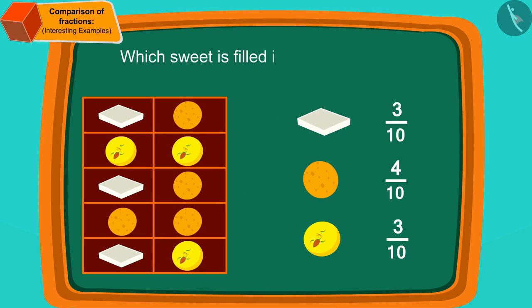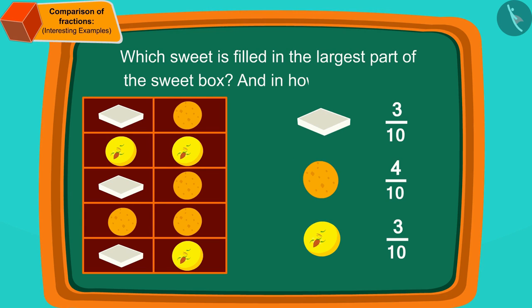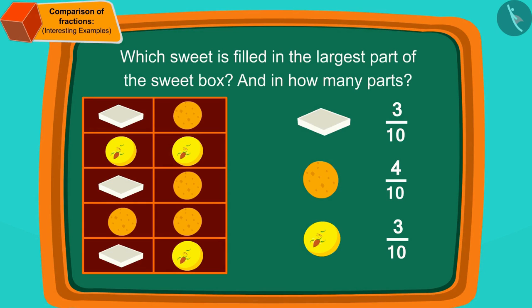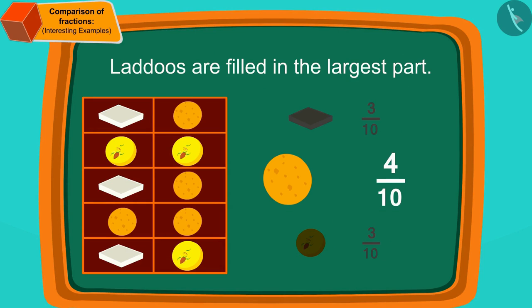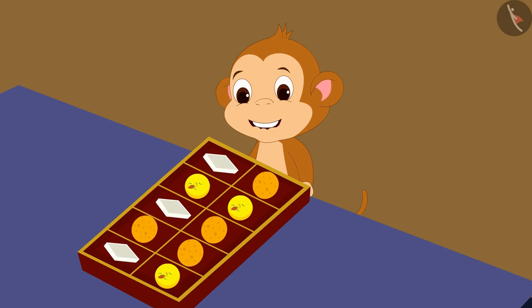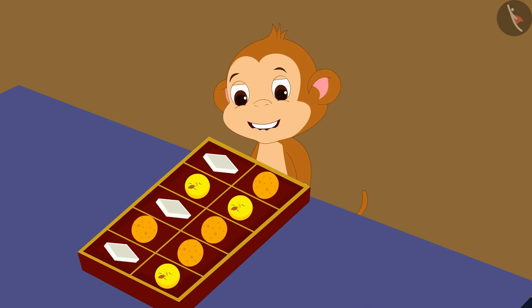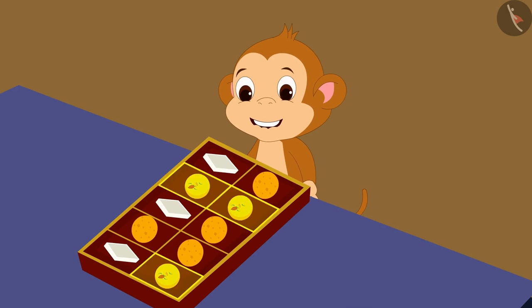Which sweet is filled in the largest part of the sweet box, and in how many parts? If you wish, you can stop the video and find the answer. Absolutely correct — laddus are filled in the largest part: four-tenths of the sweet box.